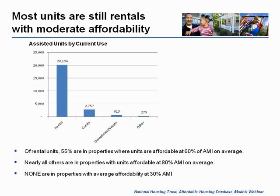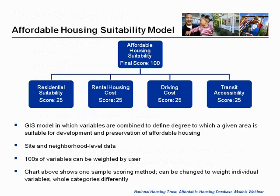I want to speak briefly about our affordable housing suitability model, which is a separate database that we've been developing. This is a little different — it helps us look at the location of assisted housing and of affordable housing in general. The affordable housing suitability model, or the AHS model, is a GIS model that lets us look at physical and social conditions to analyze the suitability of individual sites for affordable housing preservation or construction. We look at different goals: neighborhood characteristics, the physical characteristics of the site subsumed into a residential suitability score, rental housing costs, driving costs, and transit accessibility. It incorporates literally hundreds of variables that add up to scores letting us see whether places are better or worse places for assisted housing.